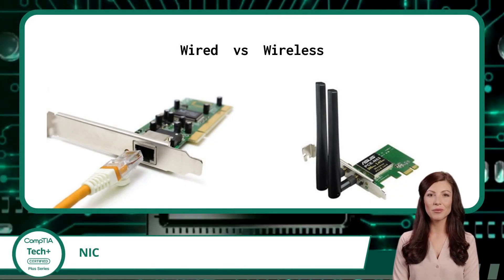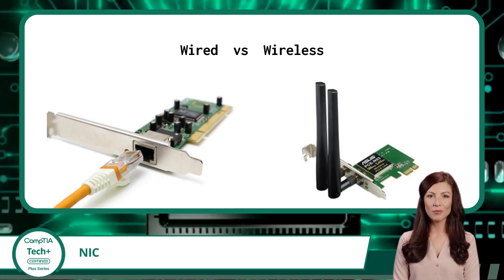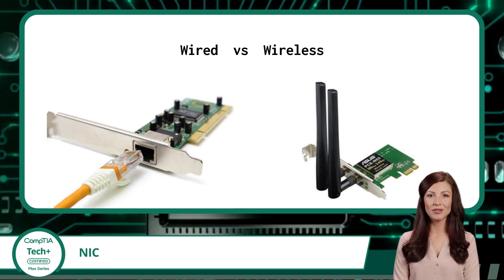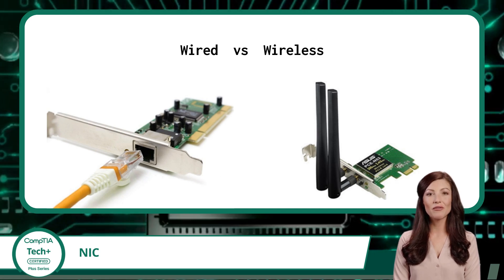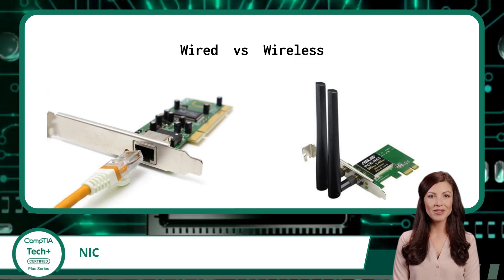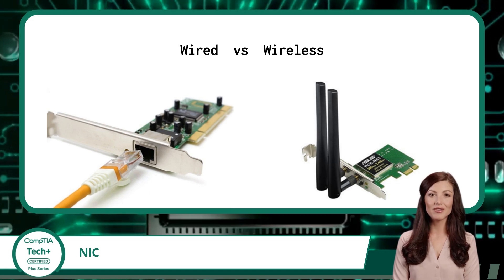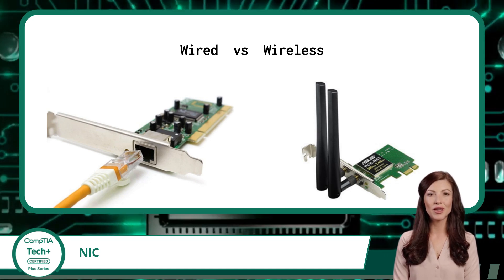NICs can come in many different forms. When classifying NICs, the first thing we can consider is whether they are wired or wireless. Wired NICs use physical cables, such as Ethernet cables, to establish a network connection. They generally offer faster and more reliable data throughput rates. Wireless NICs, on the other hand, utilize wireless technologies such as Wi-Fi, Bluetooth, NFC, or even cellular to connect to a network without the need for physical cables.